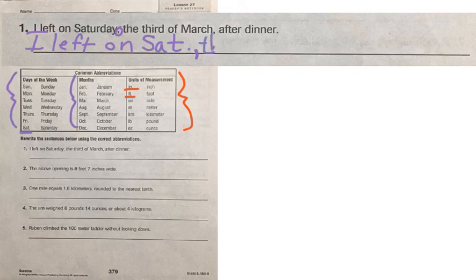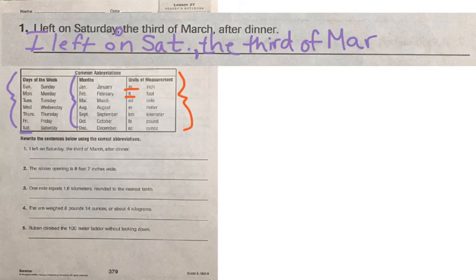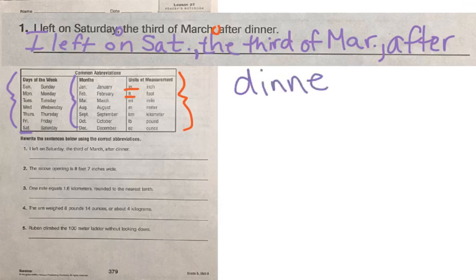Then it says 'the 3rd of March.' March, being a month, is abbreviated M-A-R, period. You'll also see there's a comma after that, so you'll have the period after March and then a comma in the sentence. Then you have 'after dinner.' Don't forget your period at the end of the sentence. That's how you complete these — finding words that need to be abbreviated.